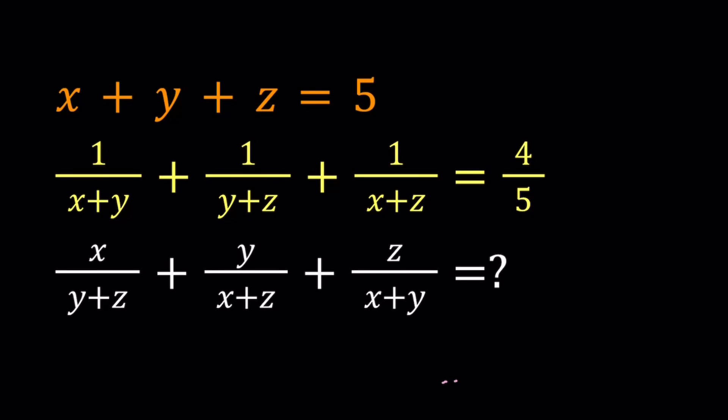Hello everyone. In this video we're going to be evaluating an algebraic expression given two other expressions. So we're given two equations. One of them is equal to 5, the other one is 4 fifths. And we're going to evaluate the third one, which is x over y plus z plus y over x plus z plus z over x plus y.